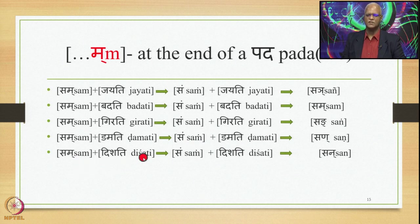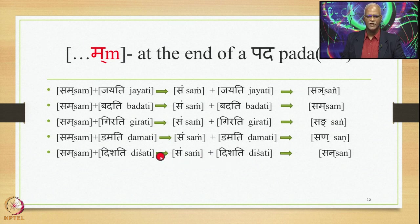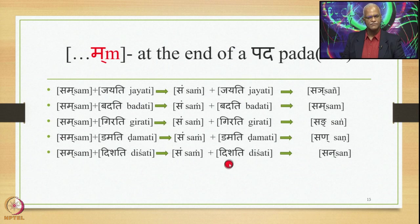Sam plus Dishati: Ma at the end of a pada followed by Hal is substituted by Anuswara by 8.3.23, giving Sam Dishati. Then 8.4.59 substitutes this Anuswara by the nasal Parasavarana of D, which is Na, giving Sam Na Dishati optionally. The other optional output is Sam Dishati (with Anuswara).